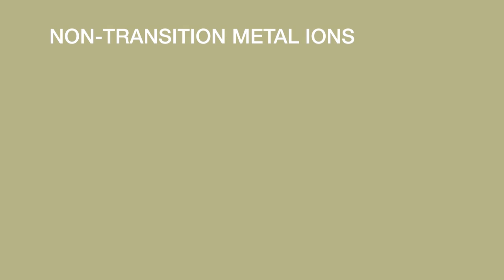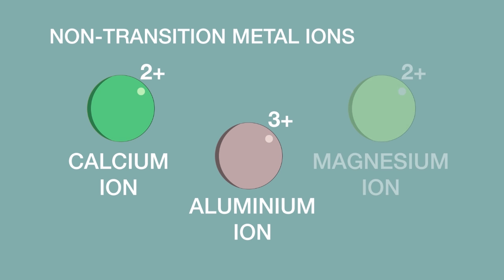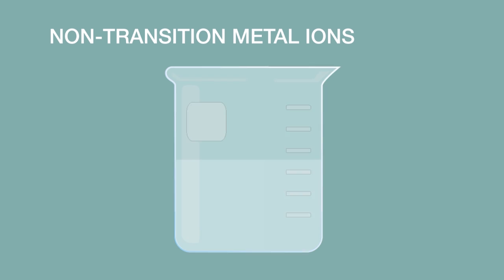Some non-transition metal ions that form a precipitate upon the addition of aqueous sodium hydroxide are the calcium ion, the aluminum ion, and the magnesium ion. These resulting metal hydroxide precipitates are white.